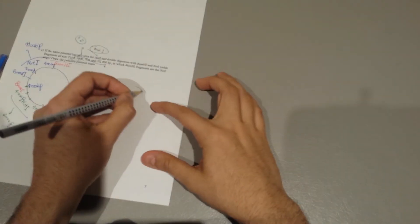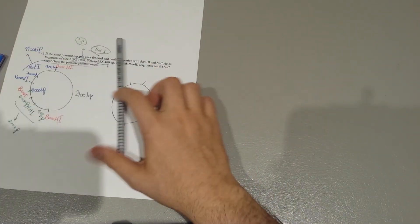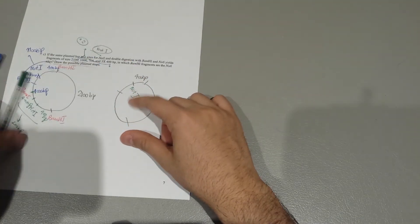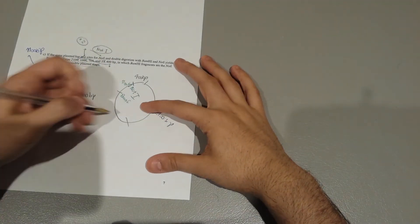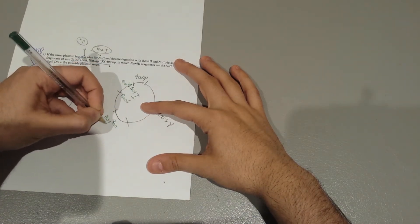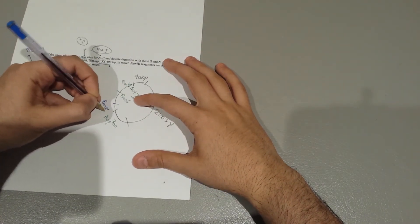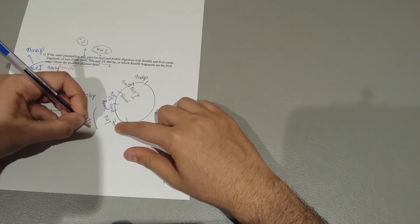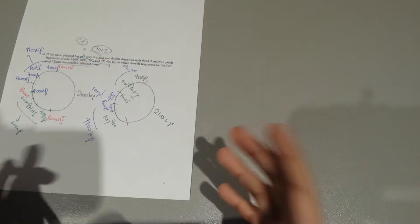I'm going to quickly go through it without drawing all the plasmids. You can have the 2100 base pairs here, one NotI site giving 400 base pairs, one BamHI site giving 400 base pairs, then 700 base pairs with one NotI site, and another BamHI site giving 400 base pairs — and this gives you 1000 base pairs — so a total of 1100 base pairs, 1000 base pairs, and 800 base pairs.